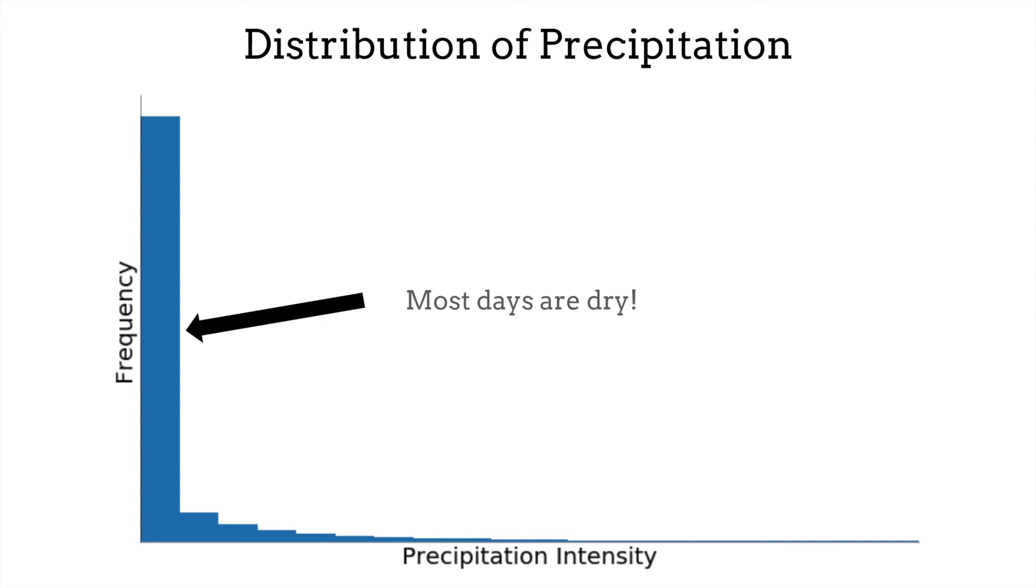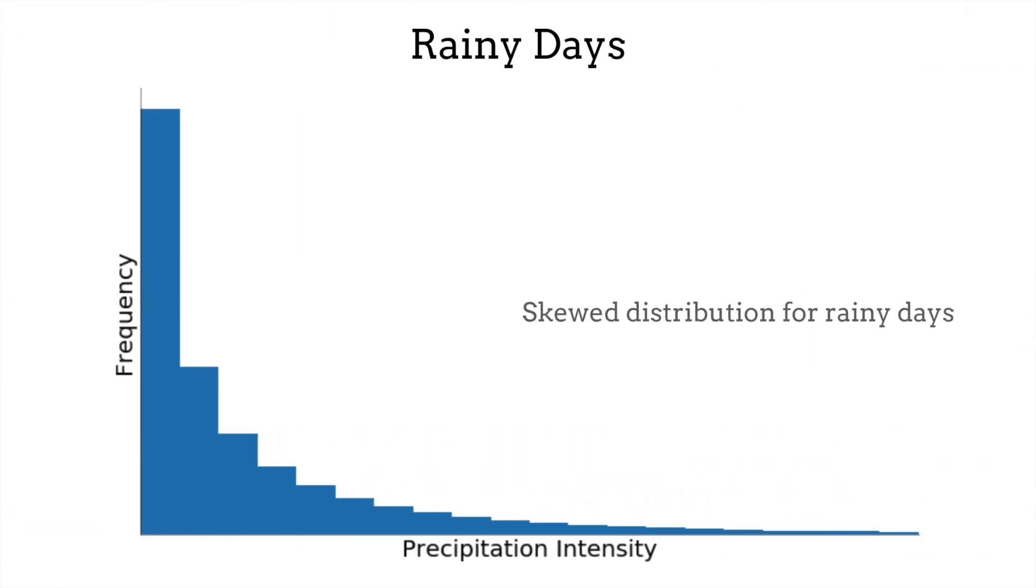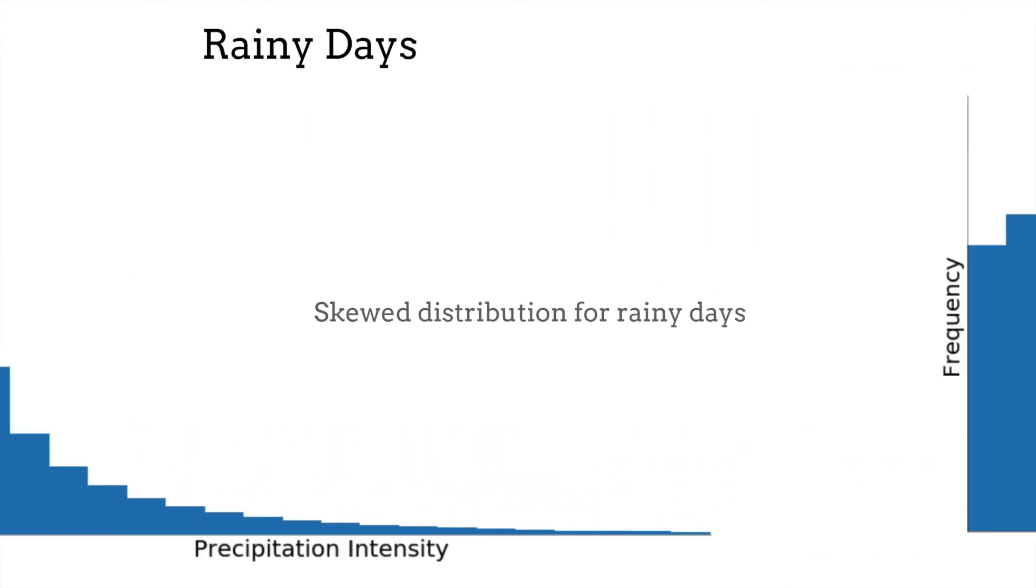We also know two things about the data. First, it does not rain every day, so most pixels in our labels will be zero. Second, when rain does occur, the distribution is highly skewed to the left.